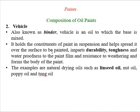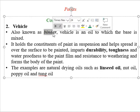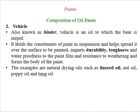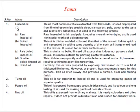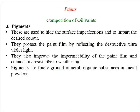The next composition of oil paint is the vehicle, also known as the binder. This is the oil to which the base is mixed. The main purpose of the vehicle or binder is to impart durability, toughness, and waterproofness to the paint. Commonly used vehicles include linseed oil, tung oil, poppy oil, and nut oil.